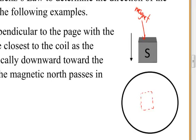What that tells me is that the direction of the induced magnetic field is going to be opposite the direction of the changing magnetic field. Third: which way is the magnetic field that is changing? Because the north pole is pointed toward the coil, the direction of the changing magnetic field is into the page. So that increasing magnetic field is going to pass into the page.